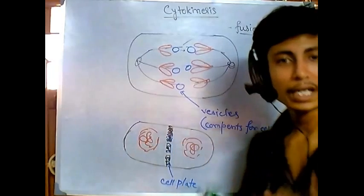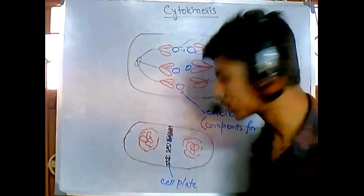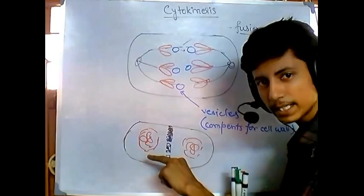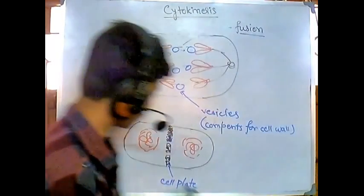Those gaps in future are termed as plasmodesmata, because those gaps are required to have communication between the side-by cells of plants.